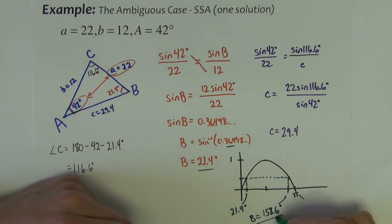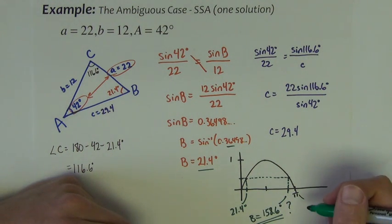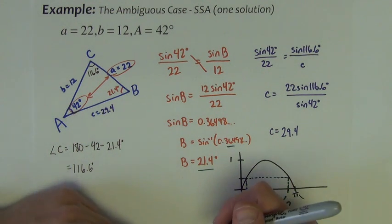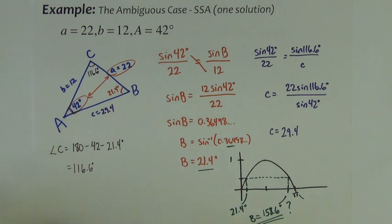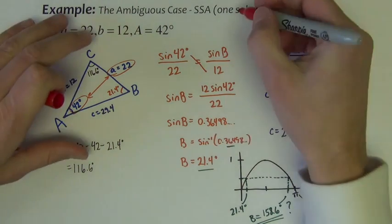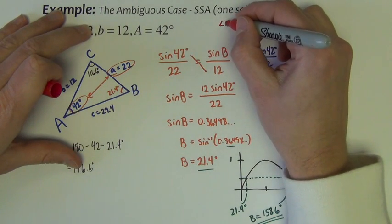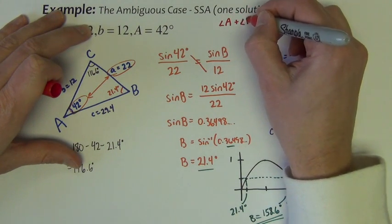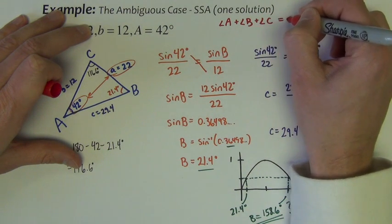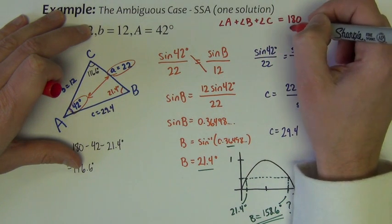So the question is, could that be angle B? Well, I argue that it can't be angle B. And the reason why it can't be angle B is because in a triangle, we know that the three angles must add to 180 degrees.